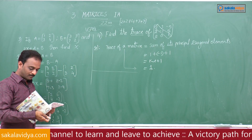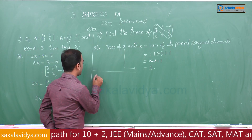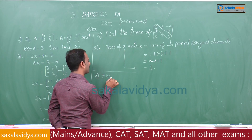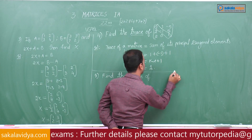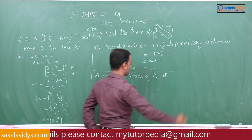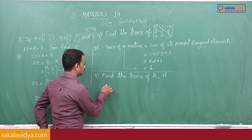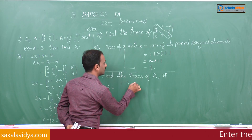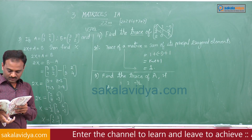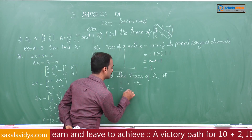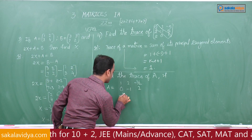Problem number 5: Find the trace of matrix A, where A equals [1, 2, -1/2; 0, -1, 2; -1/2, 2, 1].